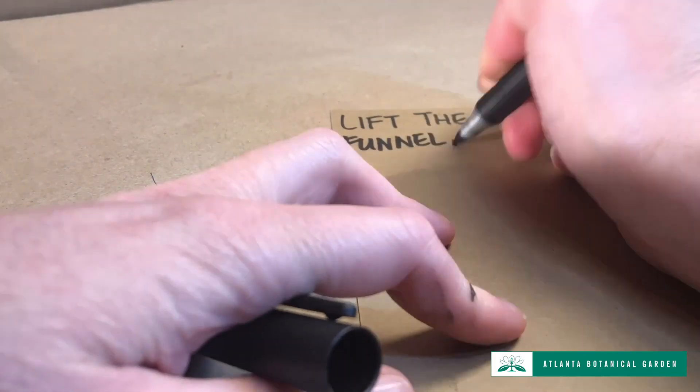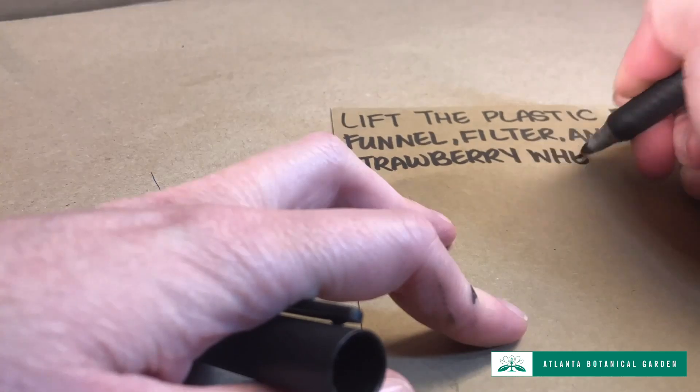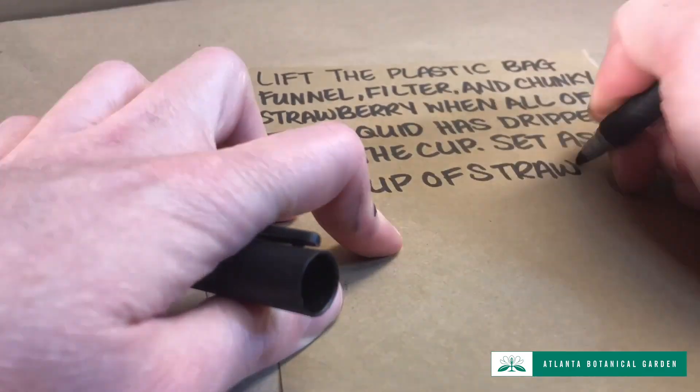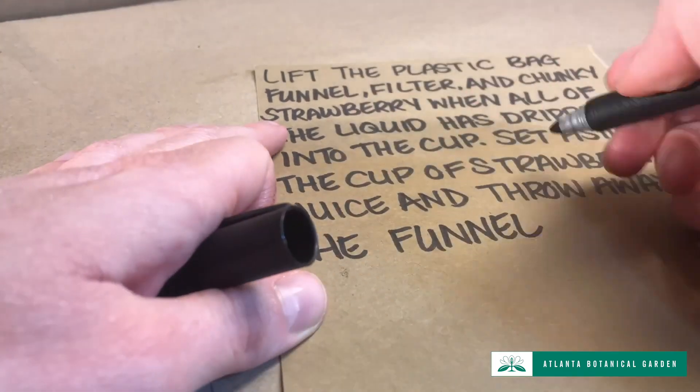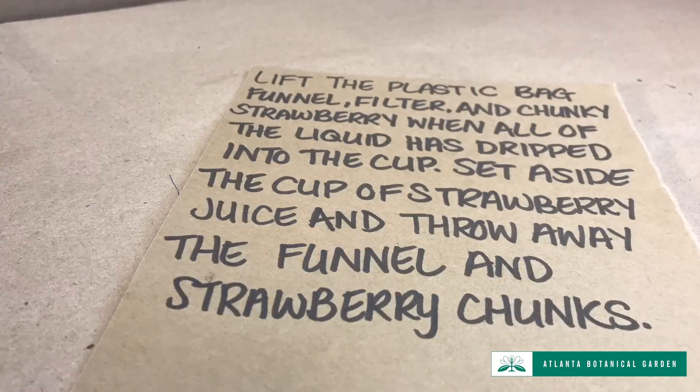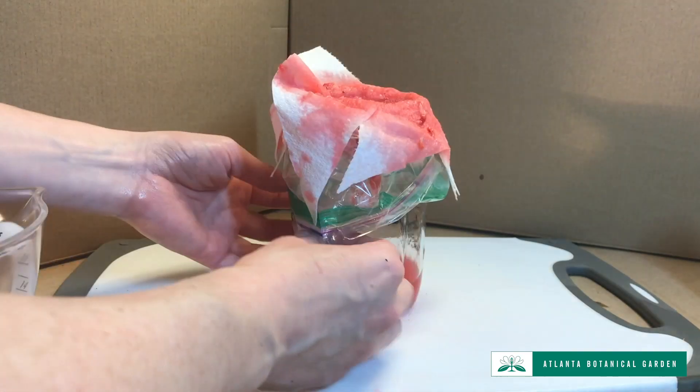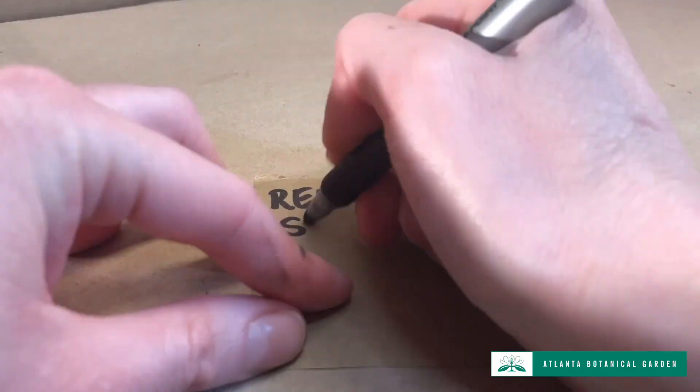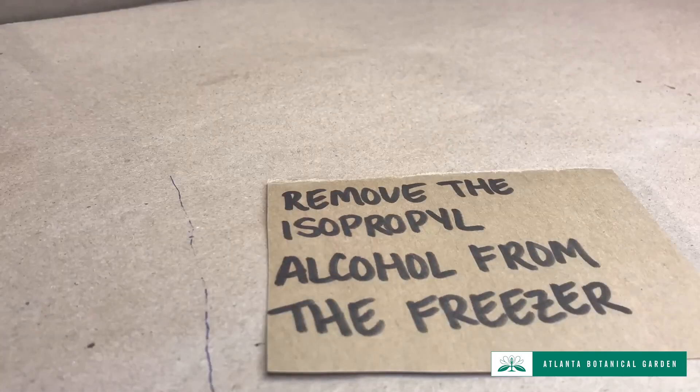Lift the plastic bag, funnel, filter, and chunky strawberry when all of the liquid has dripped into the cup. Set aside the cup of strawberry juice and throw away the funnel and strawberry chunks. Remove the isopropyl alcohol from the freezer.